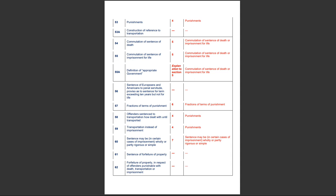Section 55 of the IPC deals with commutation of sentence of imprisonment for life, whereas section 5 of the BNS deals with commutation of sentence of death or imprisonment for life. Section 55A of the IPC deals with the definition of 'appropriate government', and the explanation to section 5 of the BNS deals with the sentence of death or imprisonment for life. Section 57 of the IPC deals with fractions of terms of punishment, whereas section 6 of the BNS deals with fractions of terms of punishment. Section 60 of the Indian Penal Code deals with sentence that may be in certain cases of imprisonment wholly or partially rigorous or simple, whereas section 7 of the BNS deals with the same.